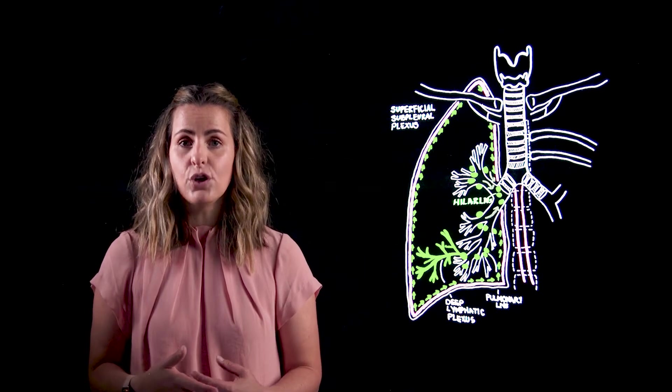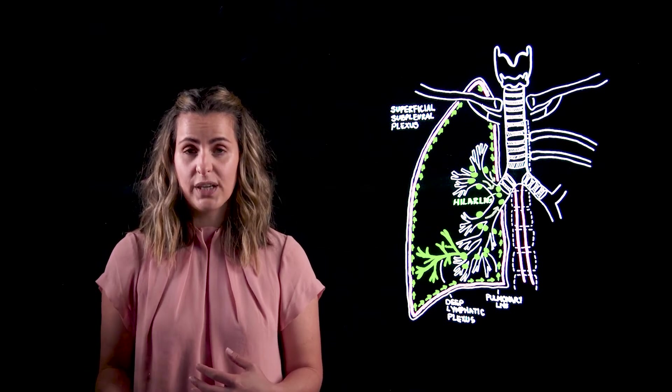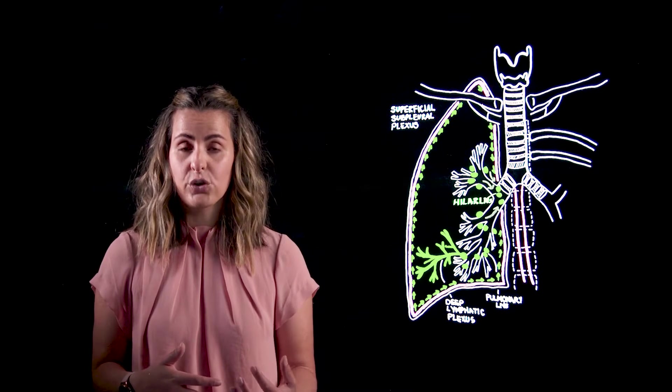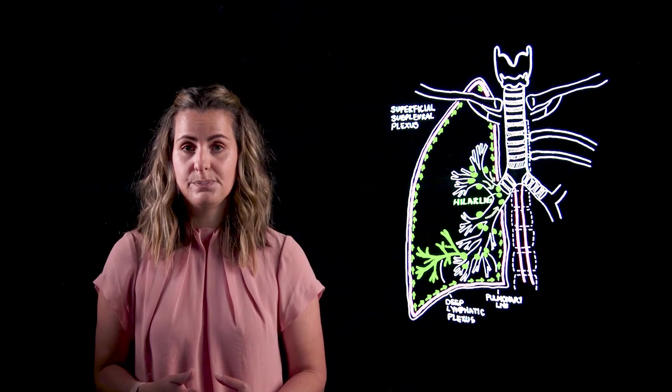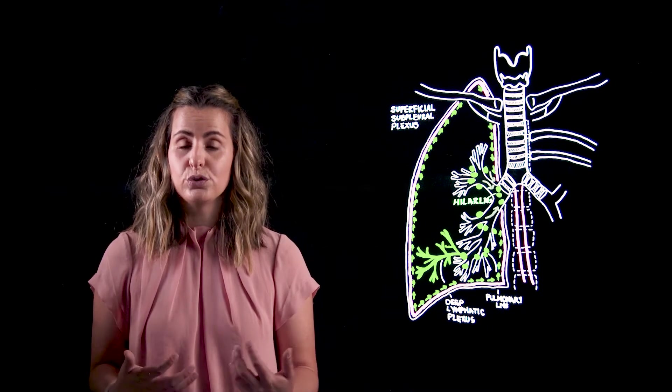There are two sets of tracheobronchial nodes: the inferior tracheobronchial nodes, also called the subcarinal nodes, and the superior tracheobronchial nodes. These are going to be immediately superior and lateral to the carina.